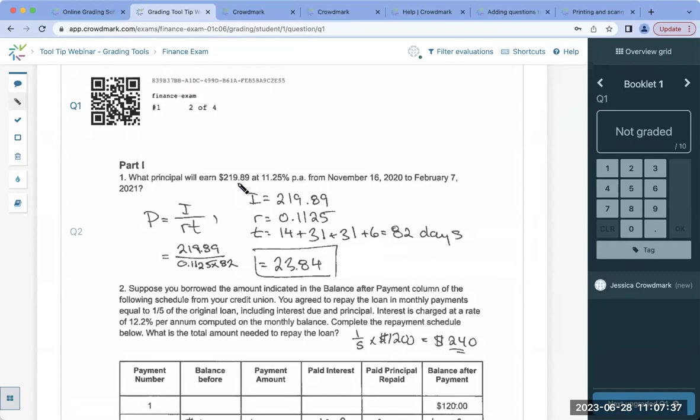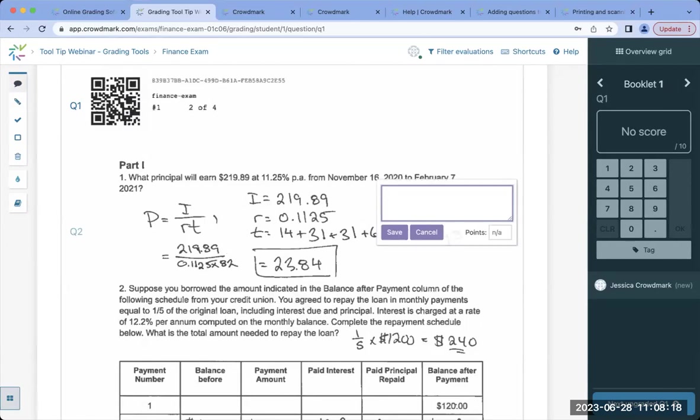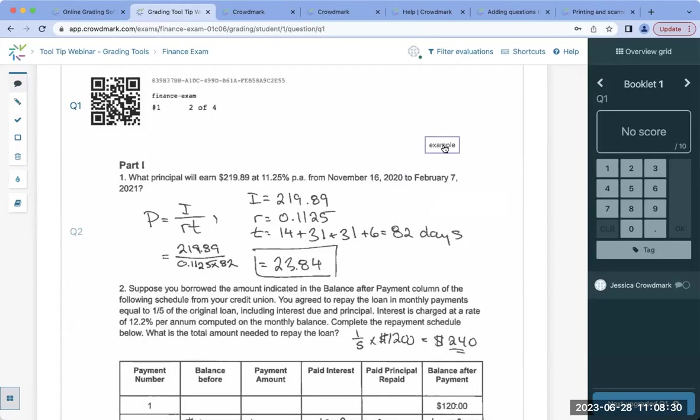As you can see here, we are dealing with an administered in-person paper-based assessment. We do have our QR code here and we have our template for the assessment and the student's answers already uploaded. So let's go ahead and start at the top here for our grading tools that are located on the left-hand sidebar. If we click into this little speech bubble and click anywhere on the assessment page, we will open up a comment field.